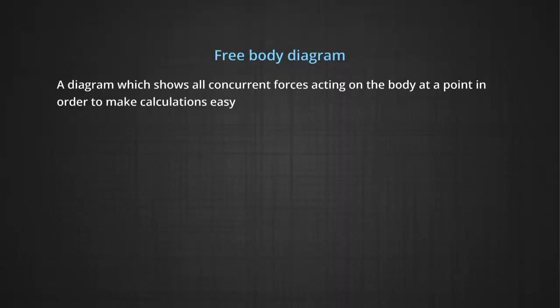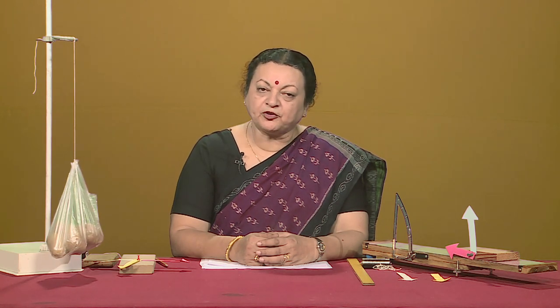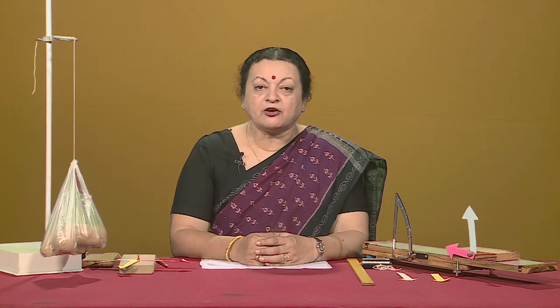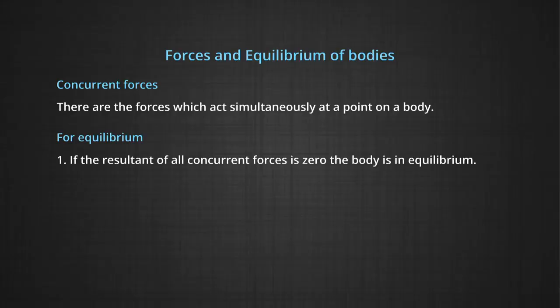One more thing you have learnt is a free body diagram. What is a free body diagram? It is a point in space where you imagine all the forces which are actually acting on the body, shown by arrows with the values of the forces marked. You also know about concurrent forces — these are forces which act simultaneously at a point on a body. Forces can change the position of the body or make the body rotate about something.